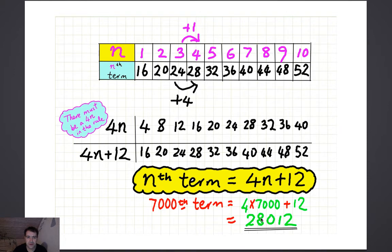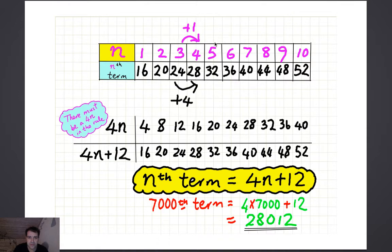Here's the answer — I hope you paused the video. I've made a table of values, so n is 1, 2, 3, 4, 5 — the position in the sequence — and the nth term is 16, 20, 24, 28, and so on. Every time the position goes up by 1, the term itself is going up by 4. So that gives you a clue that there must be a 4n in the rule.